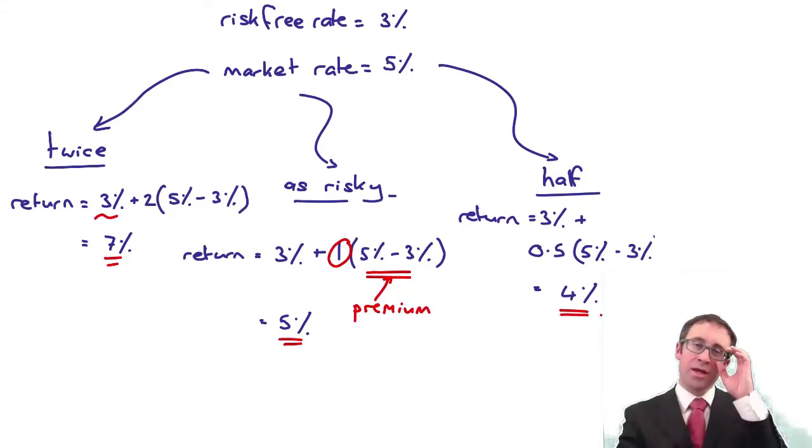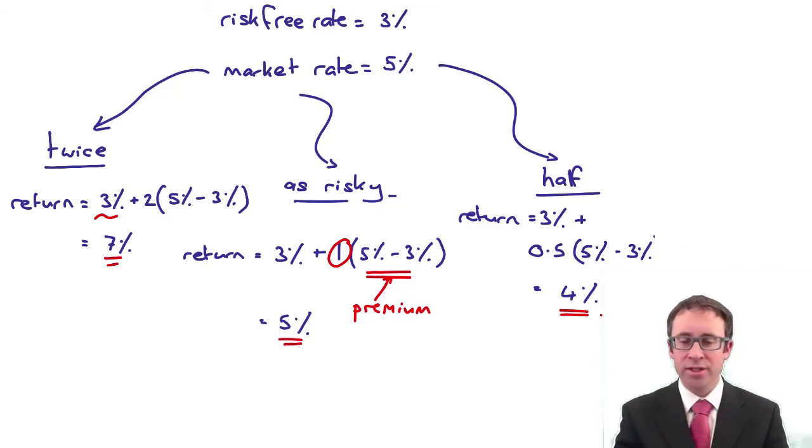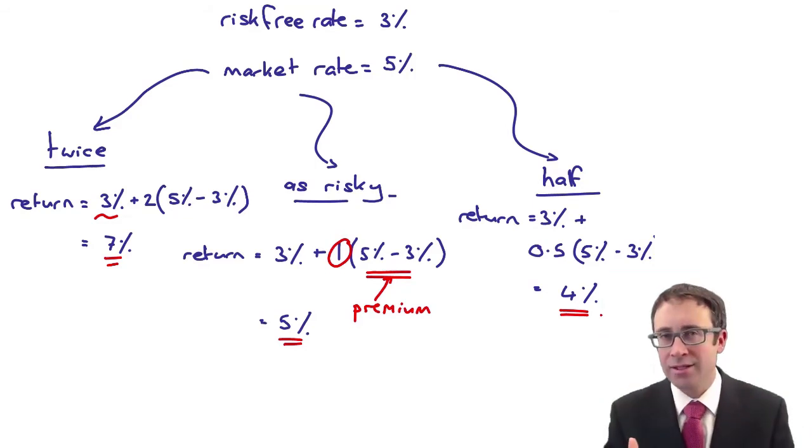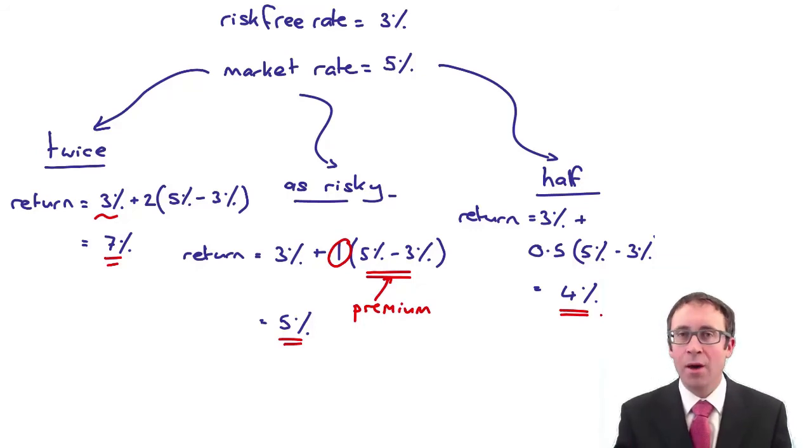Again, hopefully that starts to make even more sense now because if you have an investment that's half as risky, the market's giving you 5%. You don't want half of the 5% to give you 2.5%. I can get 3% from the risk-free rate of return by investing in government bonds and gilts. So therefore you need half of the return premium for investing on the market, half of the 2%. And that essentially is the basis of CAPM and how it works.